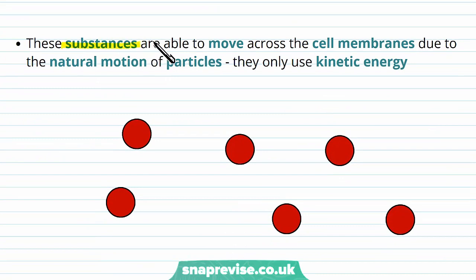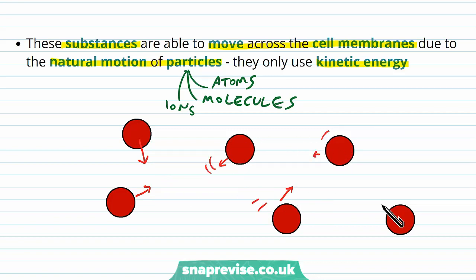The substances that we're talking about here are able to move freely across the cell membranes due to the natural motion of the particles as they are. So they only use their own kinetic energy to move. When we say particles, this can refer to atoms, molecules, and charged particles like ions as well. And every particle, as long as there's a temperature, they have their own degree of kinetic energy where they're moving around in various directions and colliding with each other randomly.